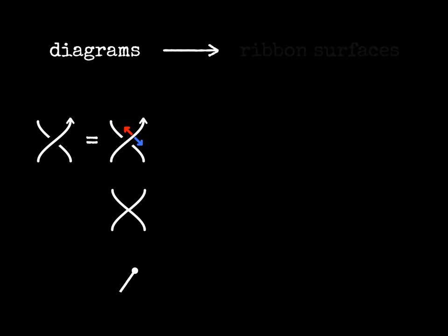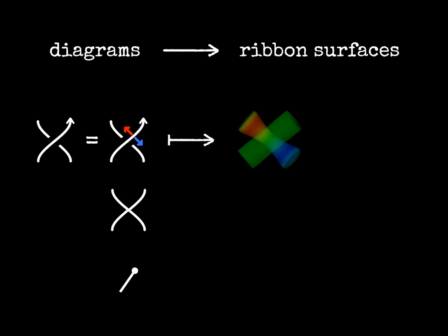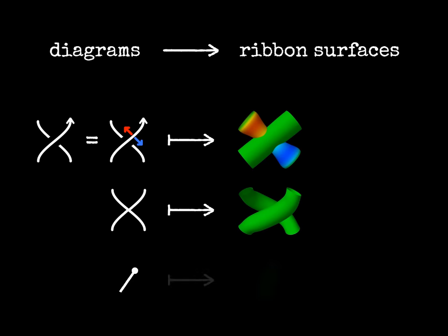This means that we have defined a function, a way to go from diagrams to ribbon surfaces. Crossings are sent to interacting tubes. Virtual crossings are sent to non-interacting tubes. And endpoints translate into cups. We call it the tube function.